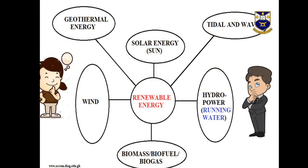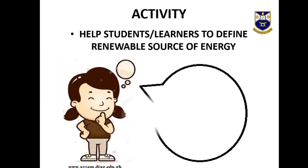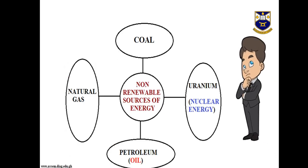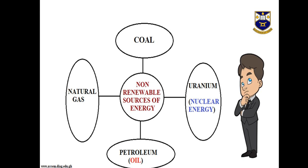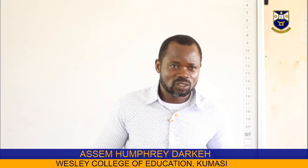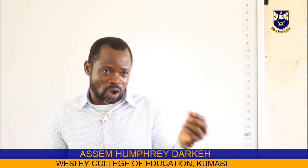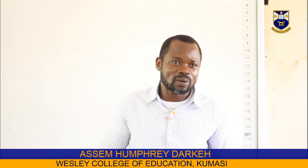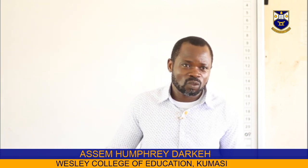When a similar activity is mounted for students, they also come out with the fact that coal, natural gas, petroleum, uranium, or better still nuclear energy are also non-renewable sources of energy. In your discussion with the students, you should also find out which of them is sustainable — whether it is the solar energy or the fossil fuels, which we obtain as petroleum, coal, natural gas, and oil. They should be able to tell you which of those sources are sustainable.